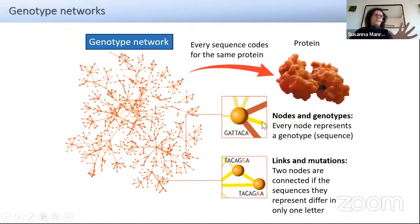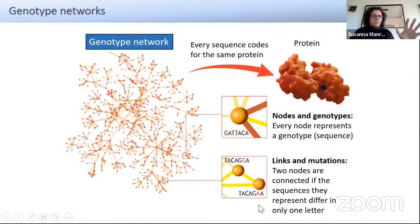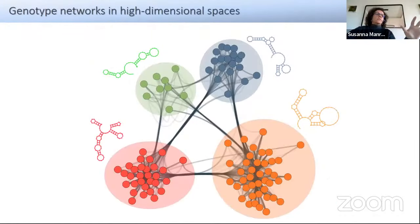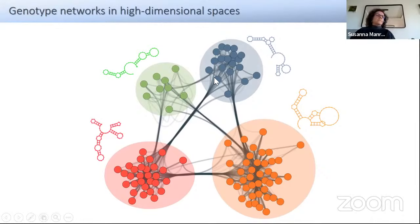Every node I talk about is a genotype — a sequence specifically — and two nodes are connected if the sequences they represent differ in only one letter. There might be other definitions, but I will stick to this one to allow us to be quantitative. When you do this, your space is somehow fragmented. You have your genotype networks mapping into given phenotypes; different phenotypes correspond to different genotype networks.